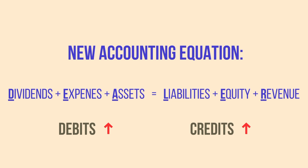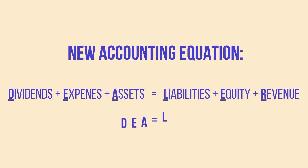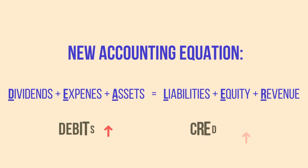You can use the acronym DEALER to help you remember this expanded accounting equation. Debits on the left, credits on the right. Assets, expenses, and dividends get increased by debits, while liabilities, equity, and revenue get increased by credits.